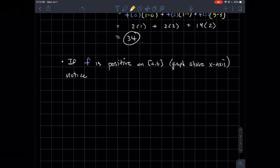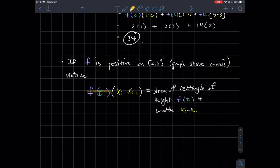Now, if f is a positive function on this interval from a to b, so what I mean by that is its graph is above the x-axis over a to b, then notice when I look at this expression f(ti) times (xi minus xi minus 1), I can think about this a little bit geometrically. That's the area of a rectangle whose height is f(ti) and whose width is xi minus xi minus 1. So this is the area of a rectangle, like length times width.